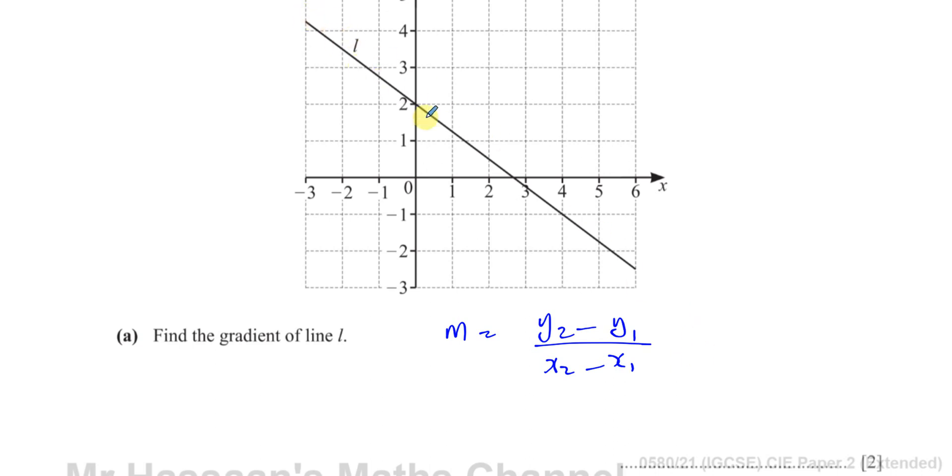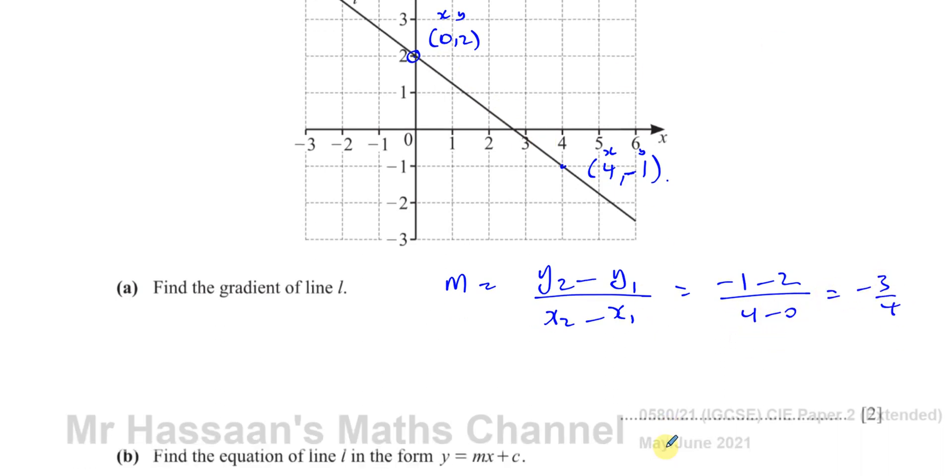We've got to find two points on the line and find the change in Y divided by the change in X between those two points. We have to choose points that are easy to read. We can see here one of those points is (0, 2) and the other point is (4, -1). So if I put this into the formula, we're going to have minus 1 minus 2 divided by 4 minus 0, which gives you minus 3 over 4, which is minus 3 quarters.